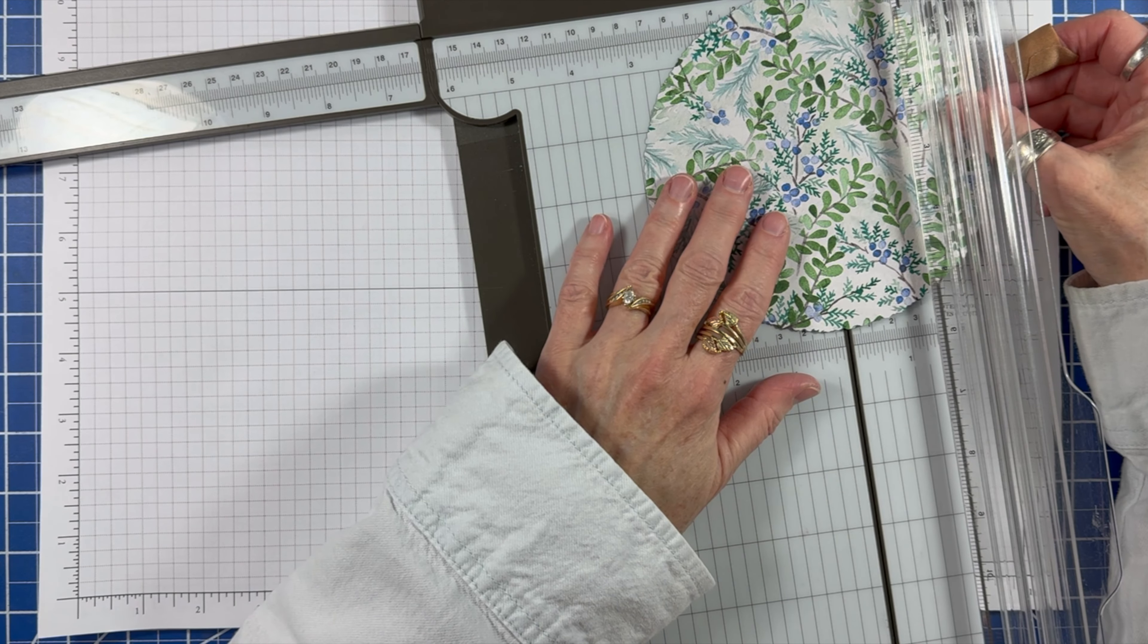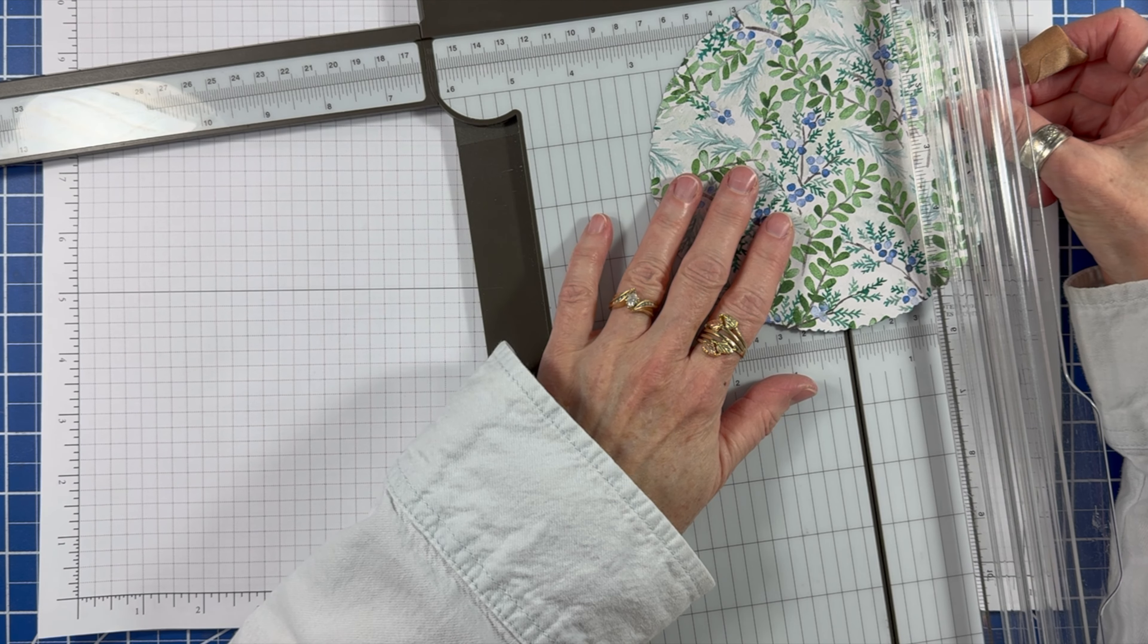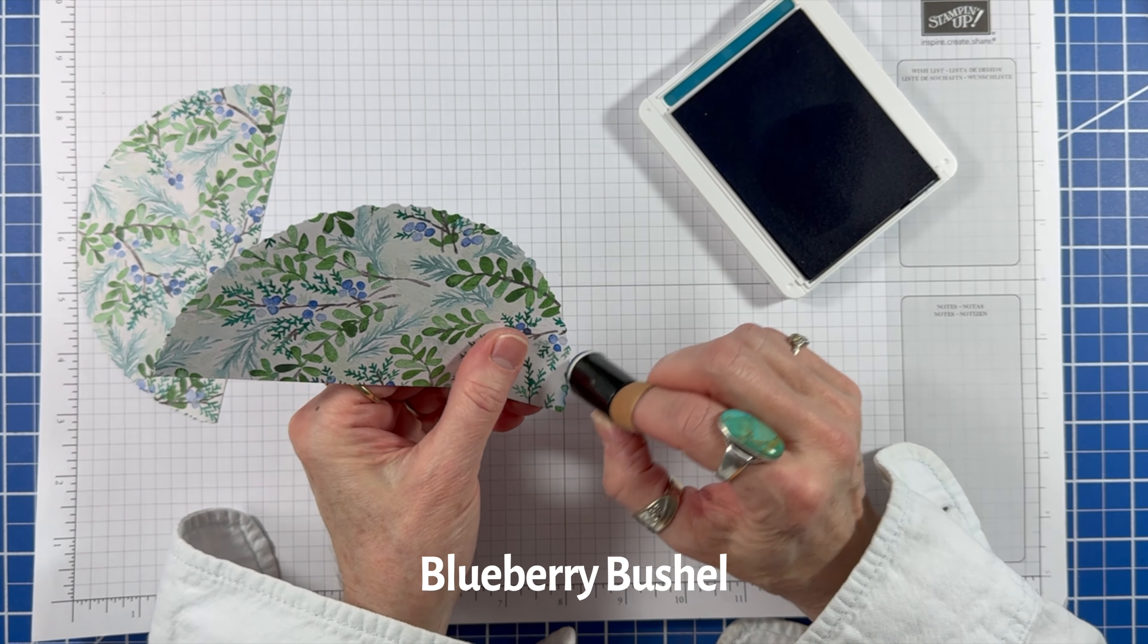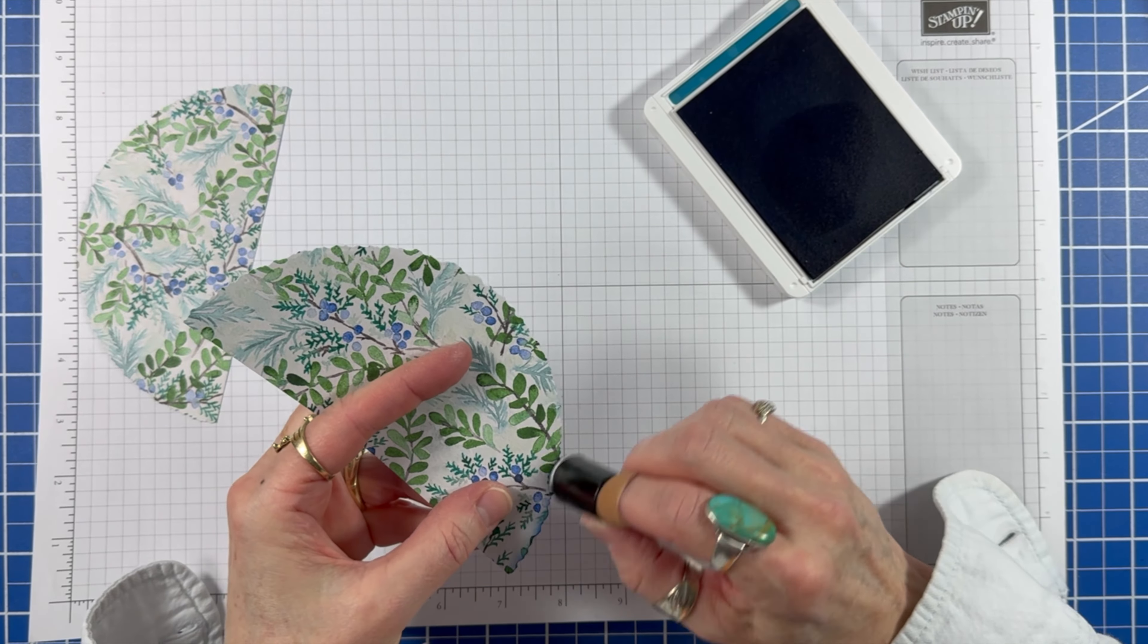Then I cut my circle in half at two and seven eighths. I'm sponging blueberry bushel ink on both sides of the deckled circle.